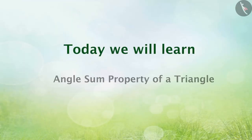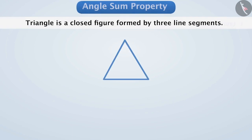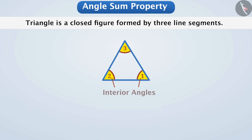Today we will learn the angle sum property of a triangle. A triangle is a closed figure formed by three line segments. Every triangle has three interior angles. For example, in this triangle, angle 1, angle 2, and angle 3 represent the three interior angles.